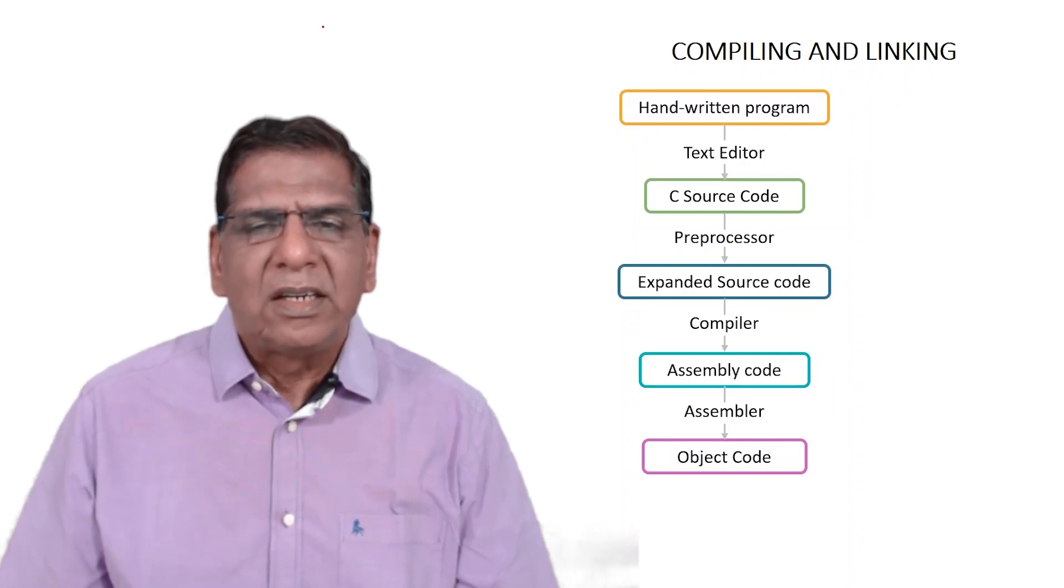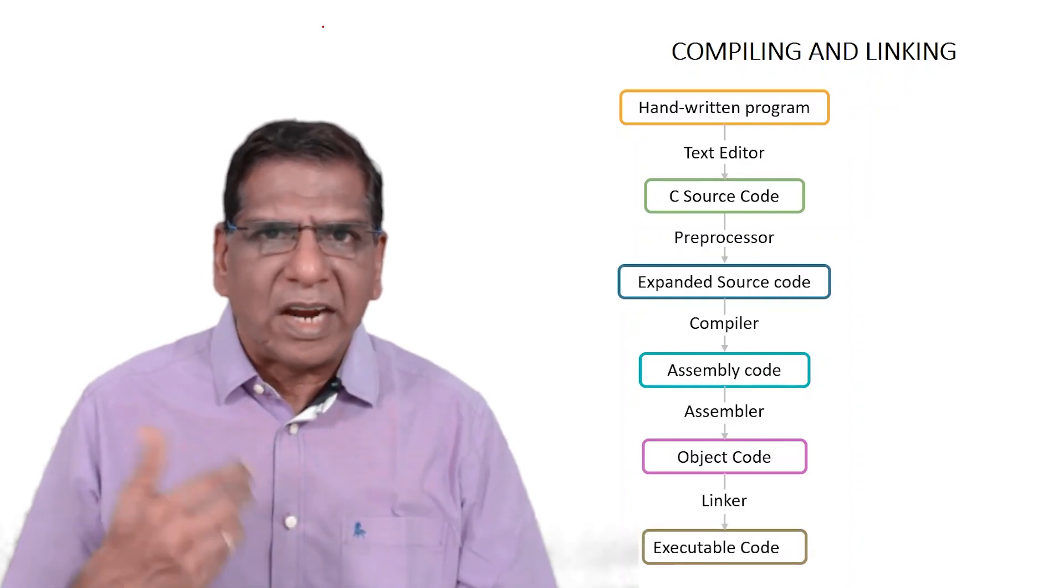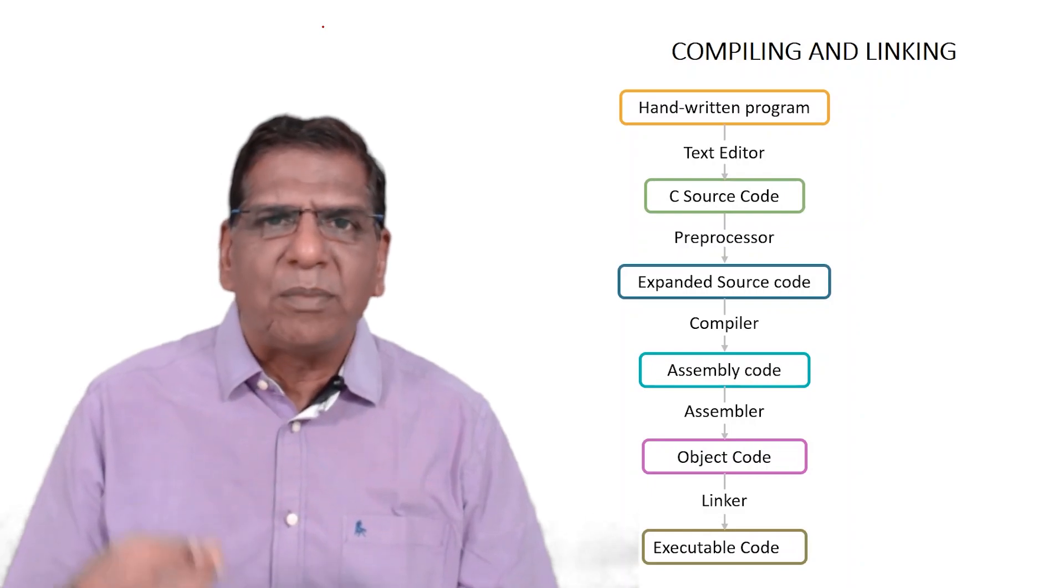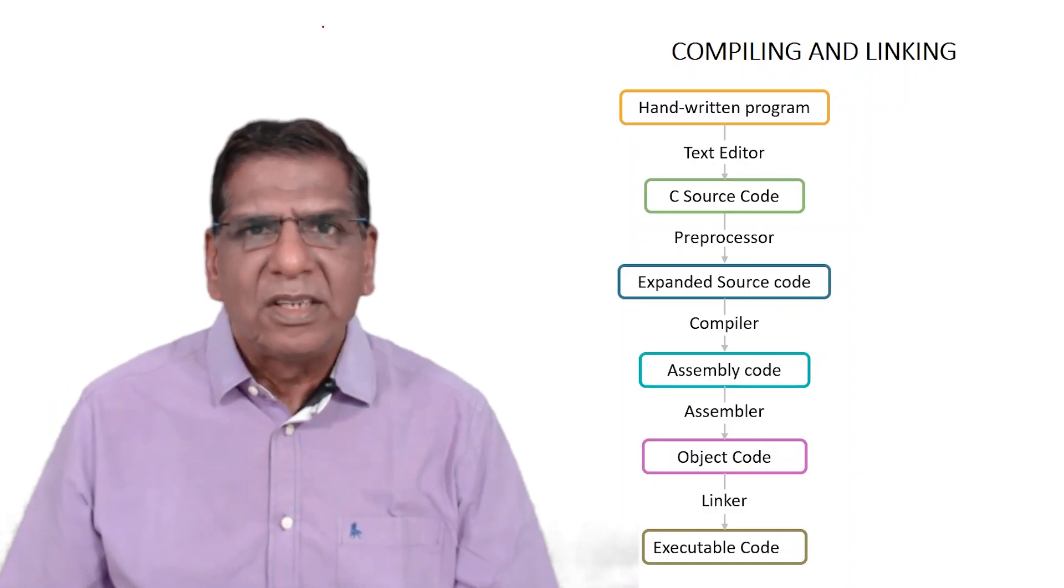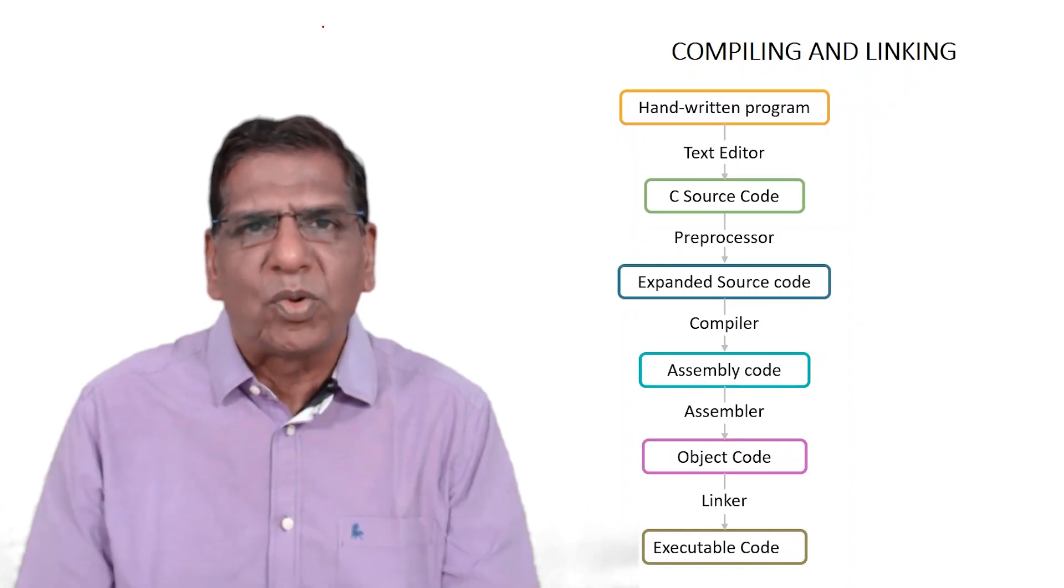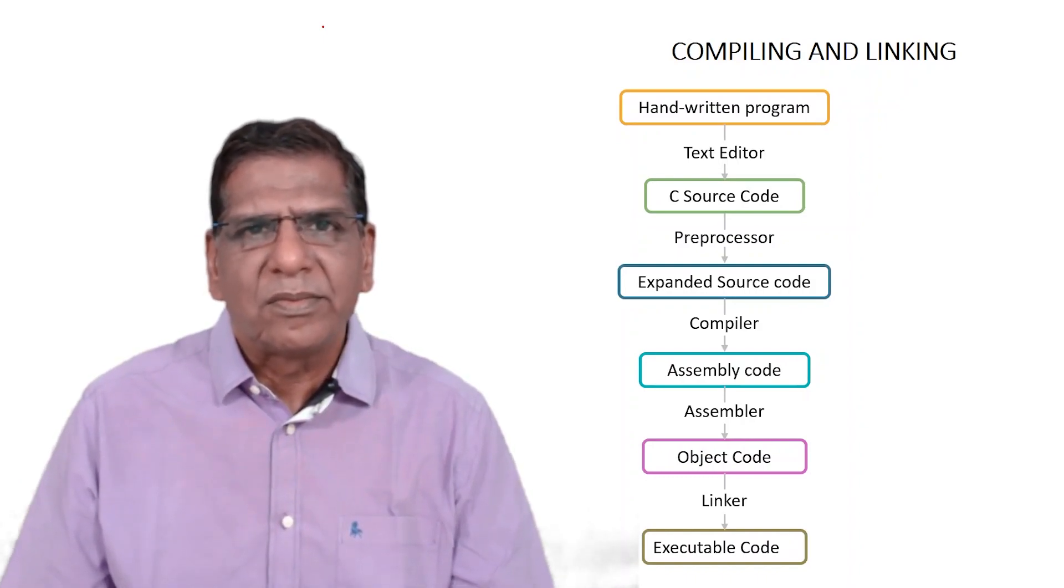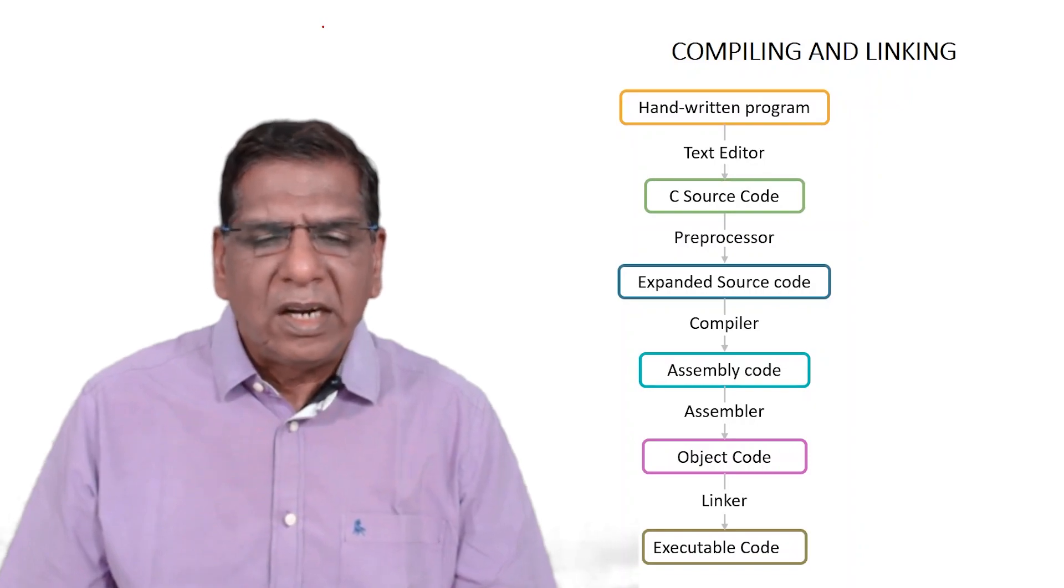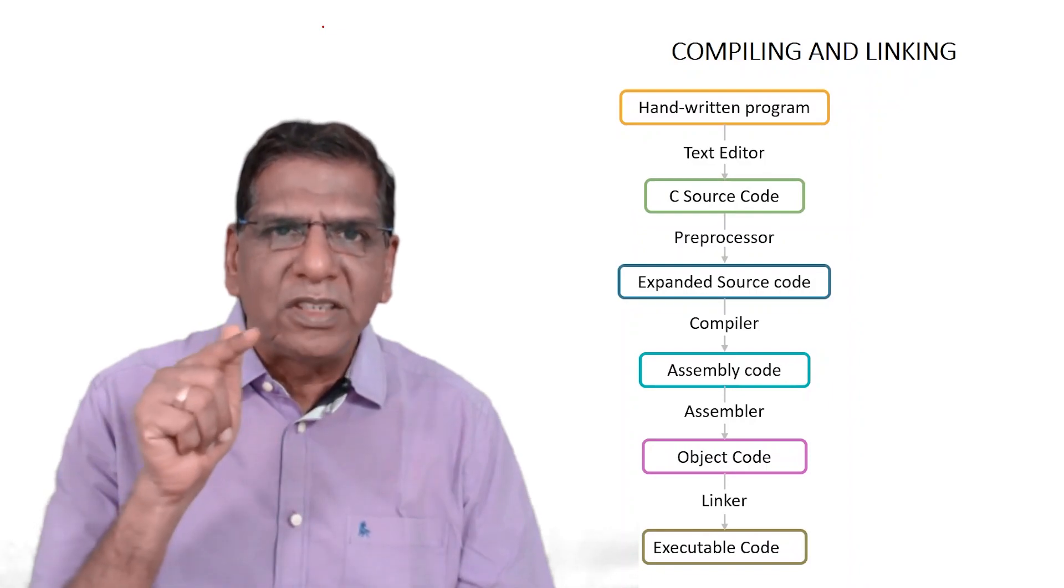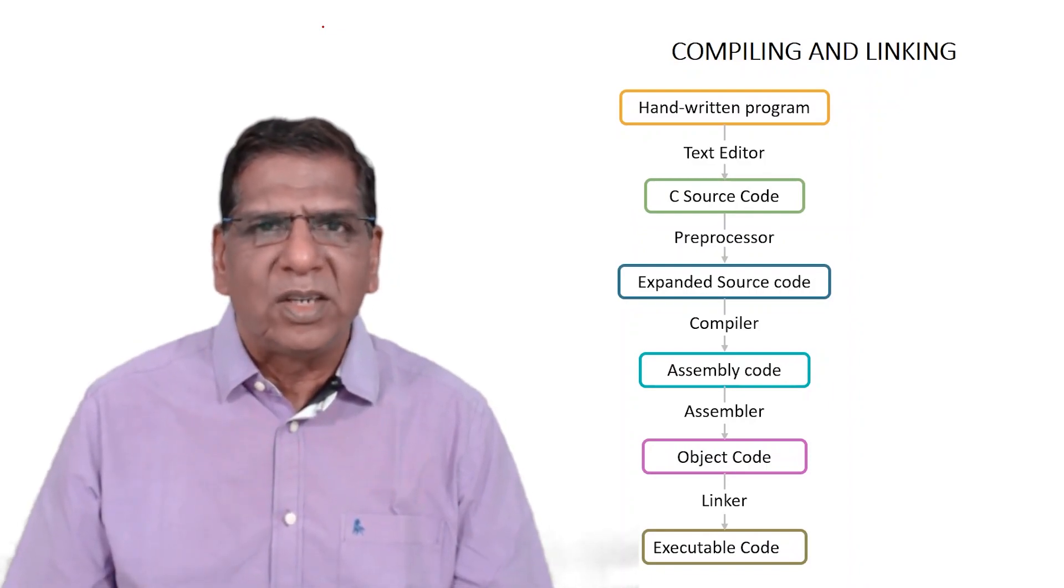And then in the build process, the next actor is the linker. It combines the object code of your program with object code of library functions. Since it combines the two, it links the two, the program is known as a linker. It links the two and creates what is known as executable code. It is this executable code which you actually get to execute.